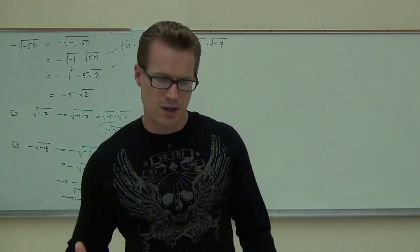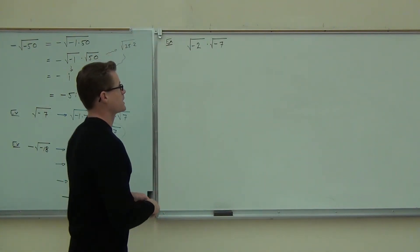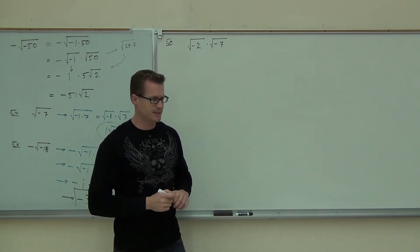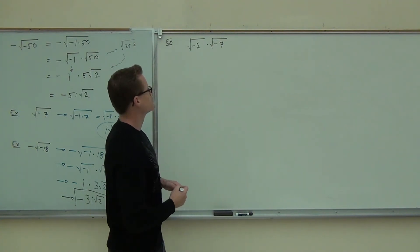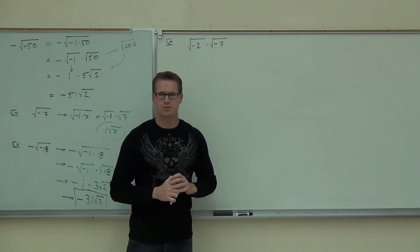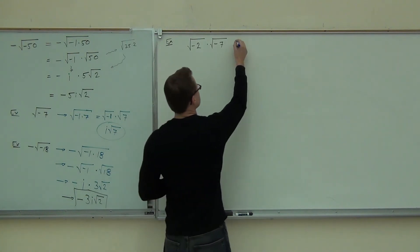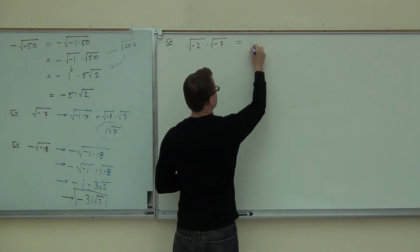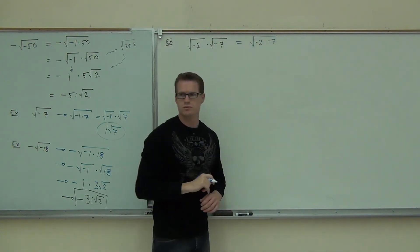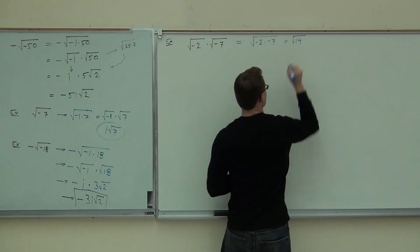Now there are some operations we're going to have to do with these imaginary numbers, and the first one we're going to talk about is multiplication of two roots. Remember, we're only dealing with square roots in this section. Now, here's the thing — if you try to use the product rule in reverse, what this would say is you'd have the square root of negative 2 times negative 7. You'd say, oh, what's negative times negative? Then you get square root of 14.